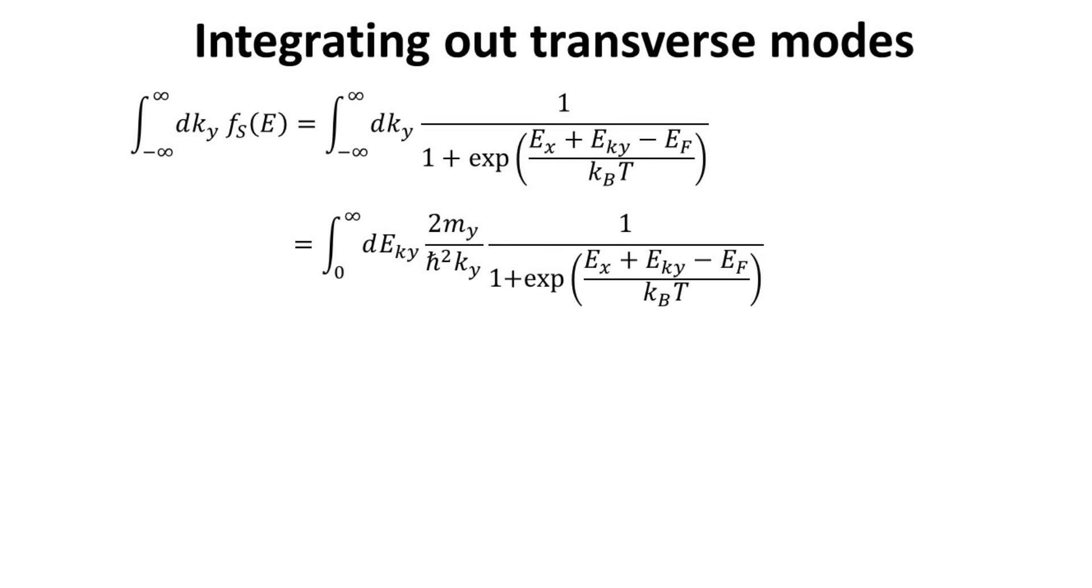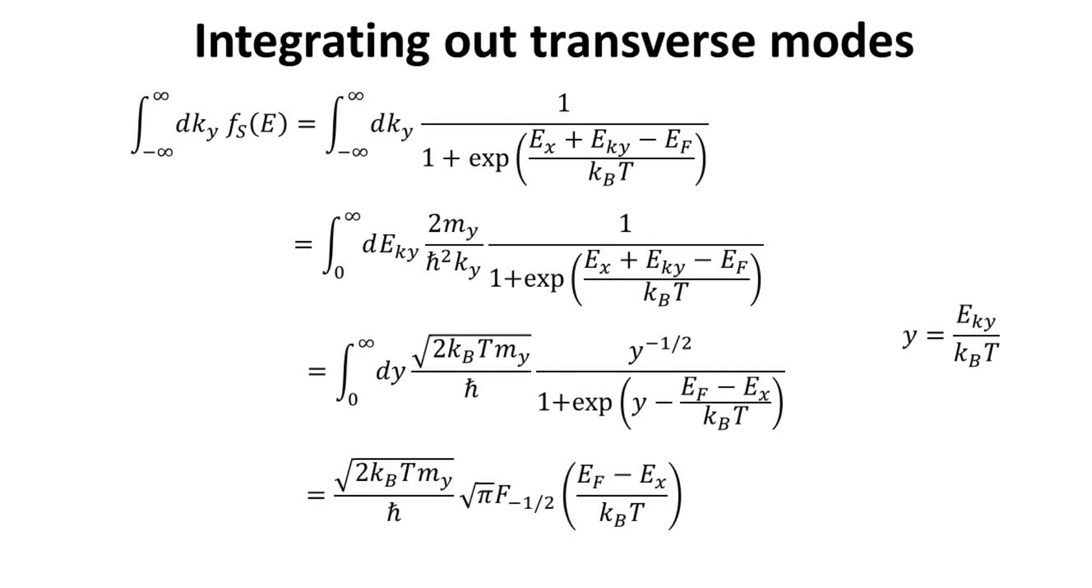Quick reminder that the E k y is the transverse energy and depends on k y quadratically. Thus, we can replace the integral over k y to E k y instead. Introducing the new dimensionless variable y for the transverse energy, we can rewrite the integral as shown. This allows us to express our solution in terms of the Fermi-Dirac integral of minus one-half as shown.